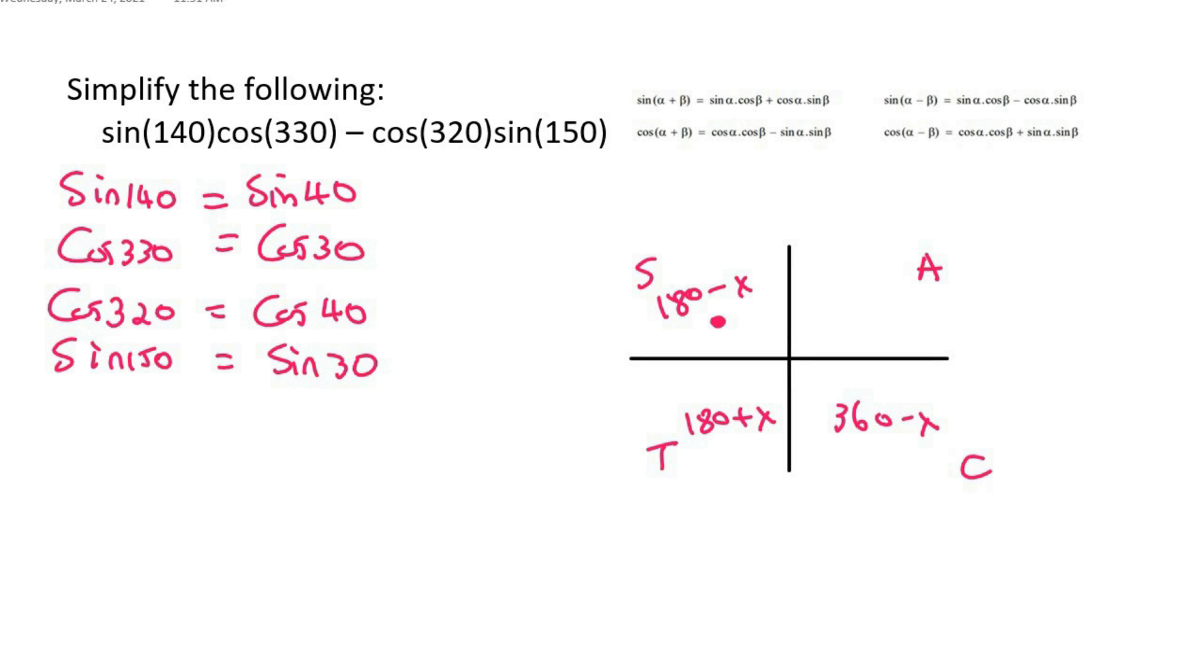So what I'm now going to do is I'm going to rewrite everything. So it's going to be sin 40 multiplied by cos 30 minus cos 40 multiplied by sin 30. Now everything looks good. We've got a 40, 30, 40, 30.